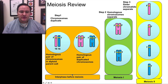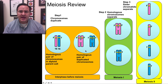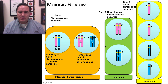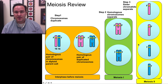So just a review of meiosis. Recall that we started off with one homologous pair of chromosomes. The DNA is duplicated during interphase before meiosis even starts. And then when meiosis begins, the first step is meiosis I, in which the homologous chromosomes are separated. And then you go to meiosis II, in which the sister chromatids are separated.